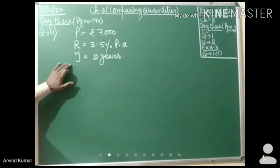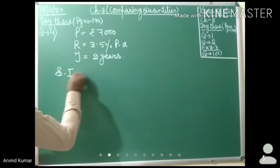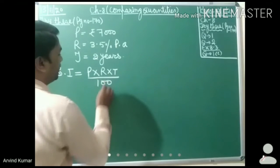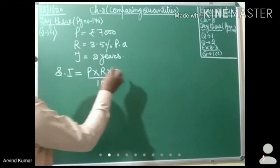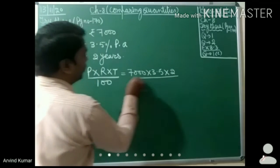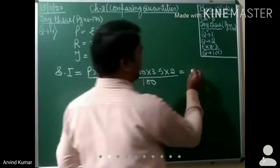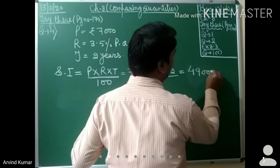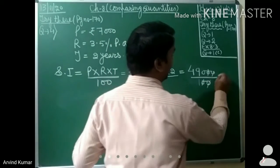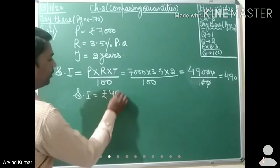First of all, find the simple interest by using this formula: Simple Interest is equal to P into R into T over 100. Putting the values P = 7,000, R = 3.5, T = 2, we get 7,000 multiplied by 3.5 multiplied by 2 over 100. On simplifying, the numerator is 49,000 divided by 100, which gives us simple interest equal to rupees 490.